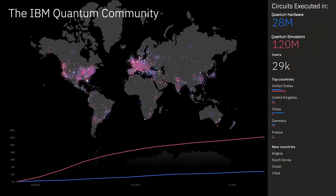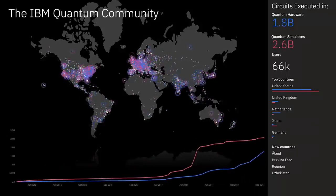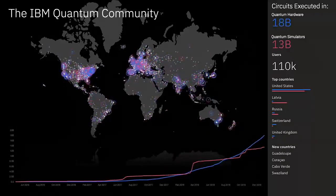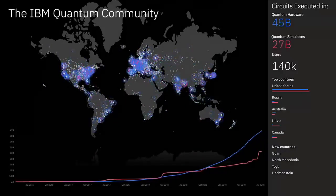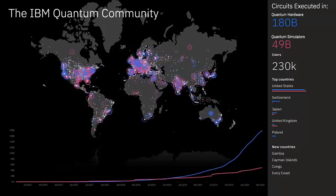And this is how the community has grown since May 2016. What you're seeing here is a visualization of the number of quantum circuits executed in the IBM Cloud quantum portfolio. And look how it has grown over the years. Over 180 billion quantum circuits have been executed with over 230,000 users all over the world.